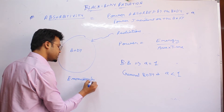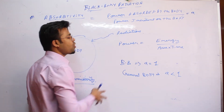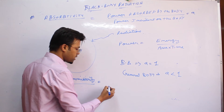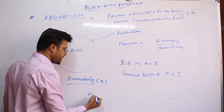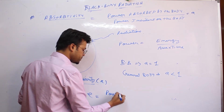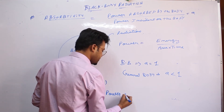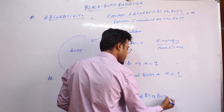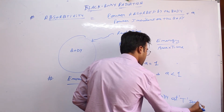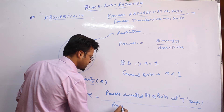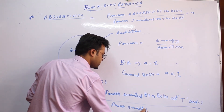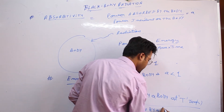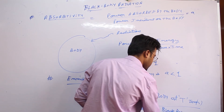Emissivity is defined as the power emitted by a body at temperature T upon the power emitted by a black body at temperature T.